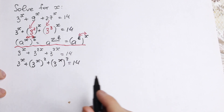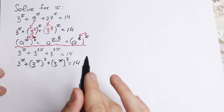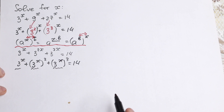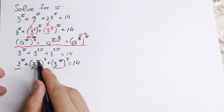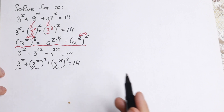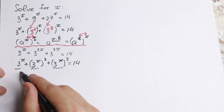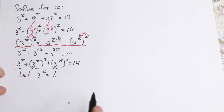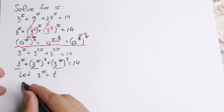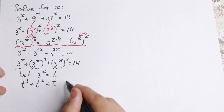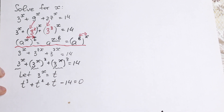This is our preparation before solving. We have 3 to the x appearing in every term, so we use substitution: let 3 to the x equal t. Writing in descending order, we get t cubed plus t squared plus t minus 14 equals 0. We now have a cubic equation.